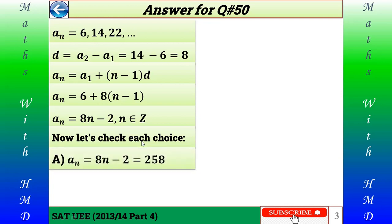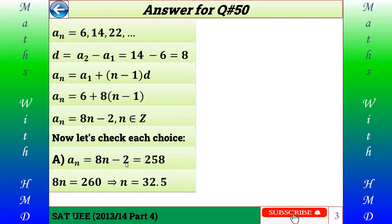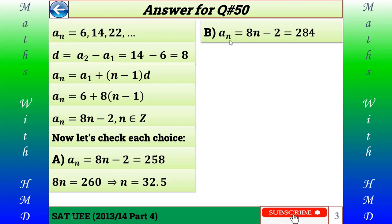Let's check choice A, which says 258. Setting 8n minus 2 equal to 258: 8n equals 260, so n equals 32.5, which is not an integer. This implies 258 cannot be a term in this sequence. Let's check choice B: the number is 284. Setting 8n minus 2 equal to 284: 8n equals 286, and n equals 35.75, which is not an integer. Hence 284 is not a term.